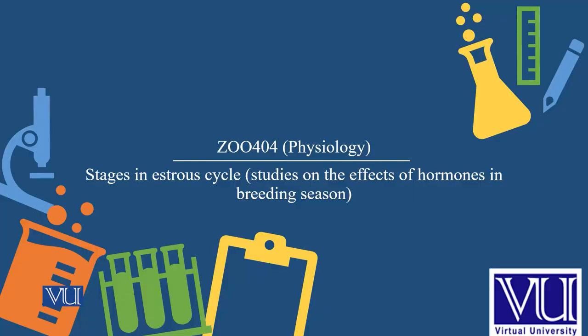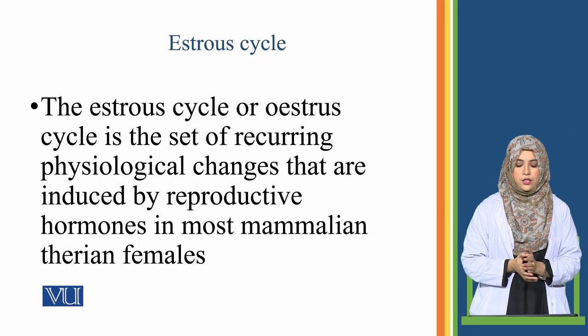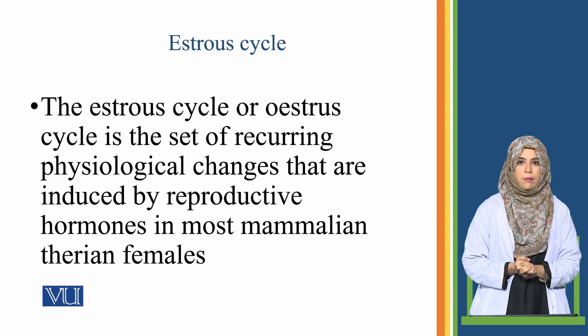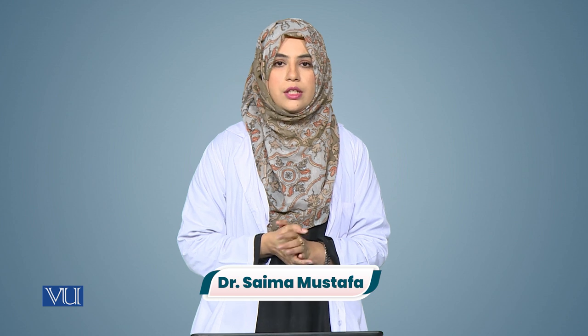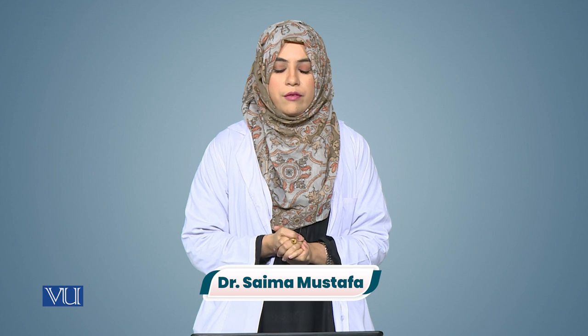Dear student, in this study you will learn about the estrous cycle and its different stages. I will also discuss the effect of hormones and breeding season. The estrous cycle is a set of recurring physiological changes induced by reproductive hormones in all mammalian females except some higher primates. This cycle starts after sexual maturity, continues until death, and is interrupted during pregnancies. The female becomes sexually receptive during this phase and allows the male for mating. The length of this cycle is 21 days.